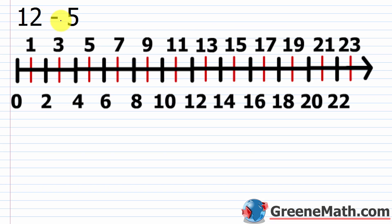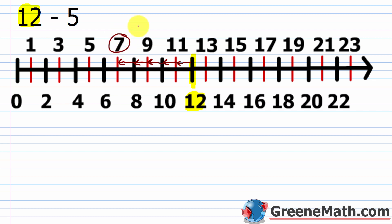Now we have 12 minus 5. We start out at 12 on the number line, and then we're subtracting away 5, so we move 5 units to the left: 1, 2, 3, 4, 5 units to the left, and we end up at 7. Of course, we know 12 minus 5 is 7, but we just did it on a number line. So 12 minus 5 equals 7.